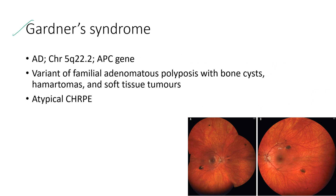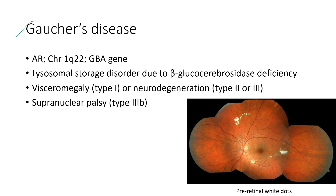Next is Gardner syndrome. It is an autosomal dominant condition affecting the APC gene. It is a variant of familial adenomatous polyposis with bones, hamartomas, and soft tissue tumors. The ocular features include atypical congenital hypertrophy of the retinal pigment epithelium, shown in these fundus images. Next is Gaucher disease. It is an autosomal recessive lysosomal storage disorder due to beta-glucocerebrosidase deficiency. Systemic features include visceromegaly or neurodegeneration, and supranuclear palsy. A montage fundus image shows pre-retinal white dots.